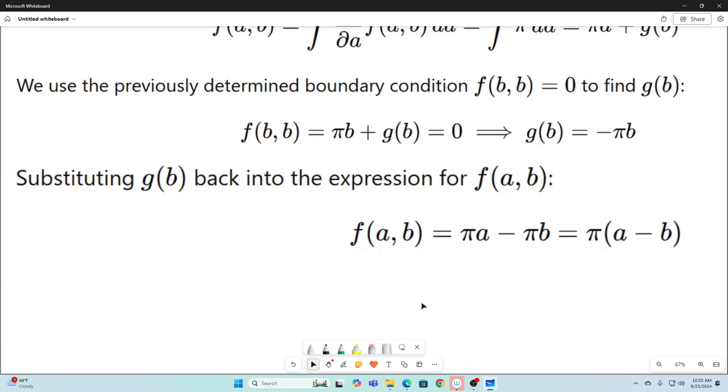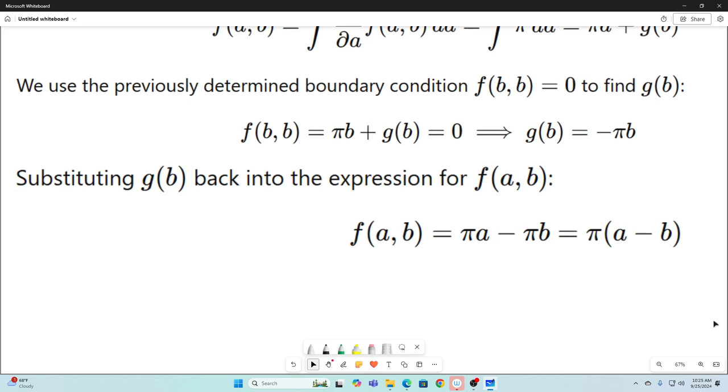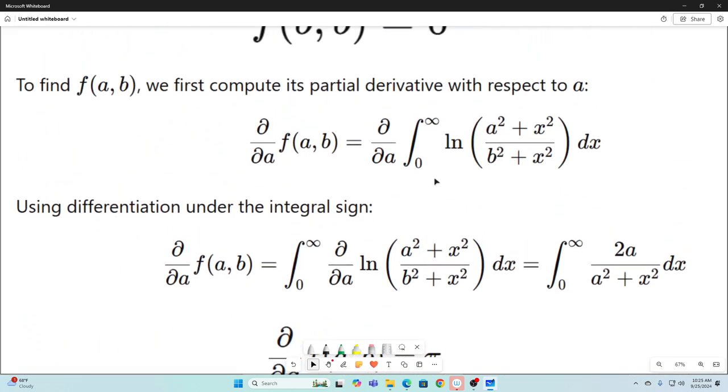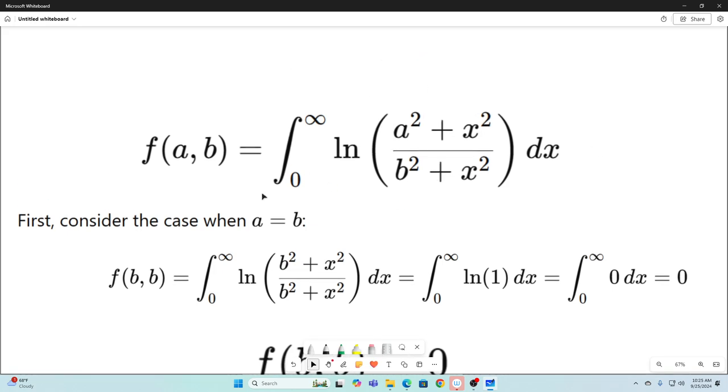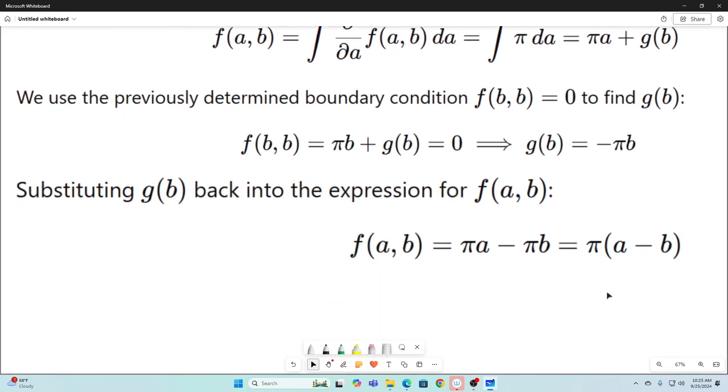Our, we just substitute g(b) back into our expression for f(a,b) right here. We just found g(b) to be negative πb, so we substitute that back in and we have our answer. So f(a,b), which don't forget started with this integral up here, evaluates to exactly π times quantity (a minus b). All right guys, I hope you enjoyed that and we will see you next time.